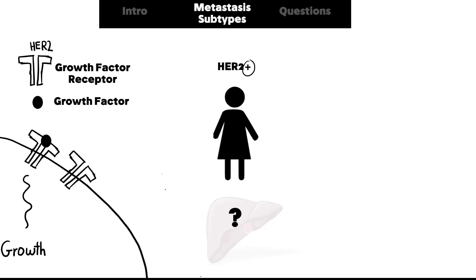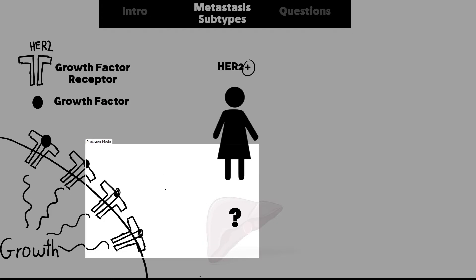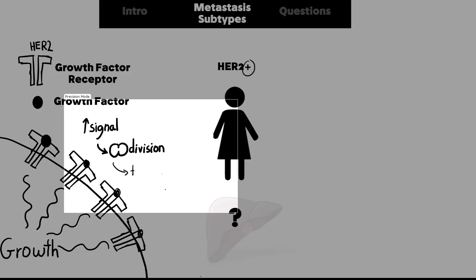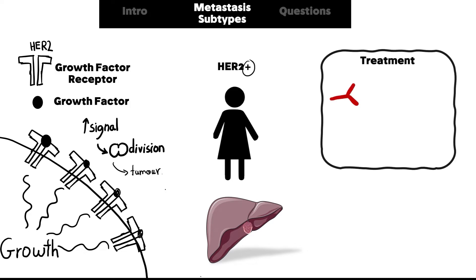Not every cell that has a HER2 growth factor receptor is called HER2 positive. Only cells that undergo certain mutations leading to the amplification of this receptor are called HER2 positive. This amplification causes an abnormal increase in growth signals, leading to increased cell division and tumor formation. The most common site of HER2 cell metastasis is the liver.